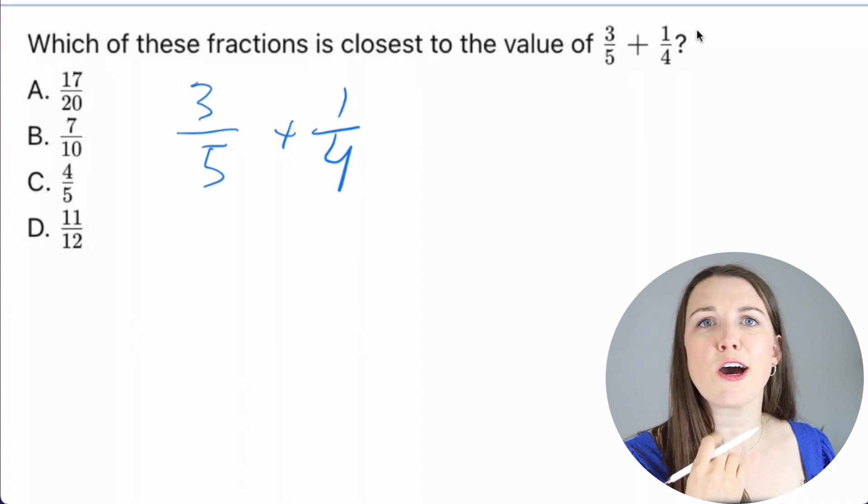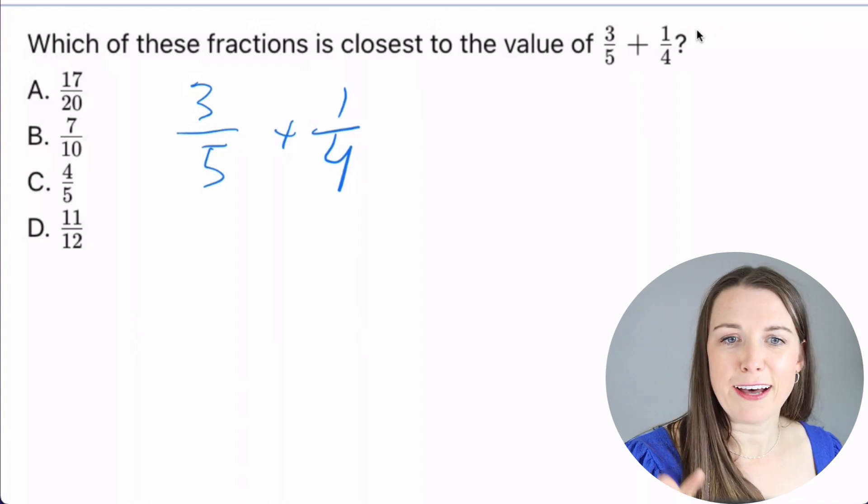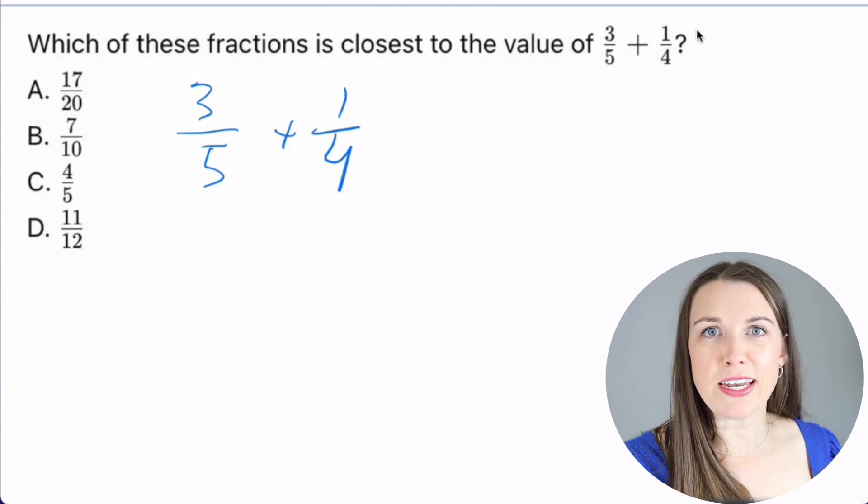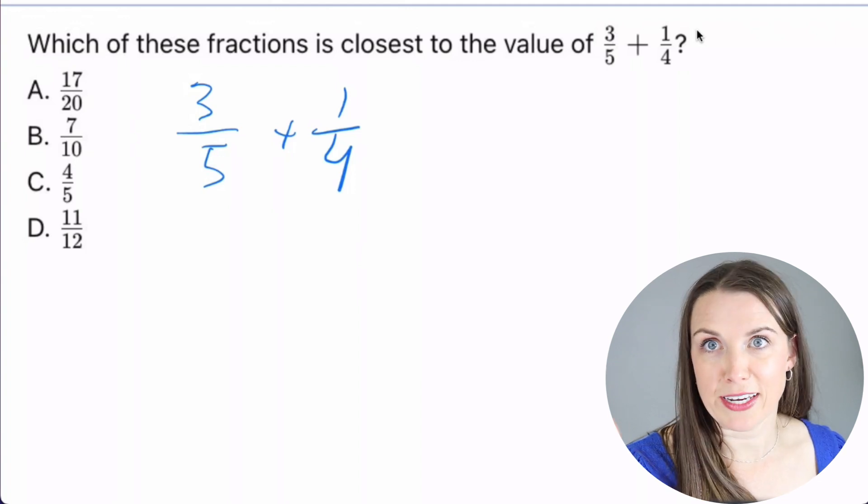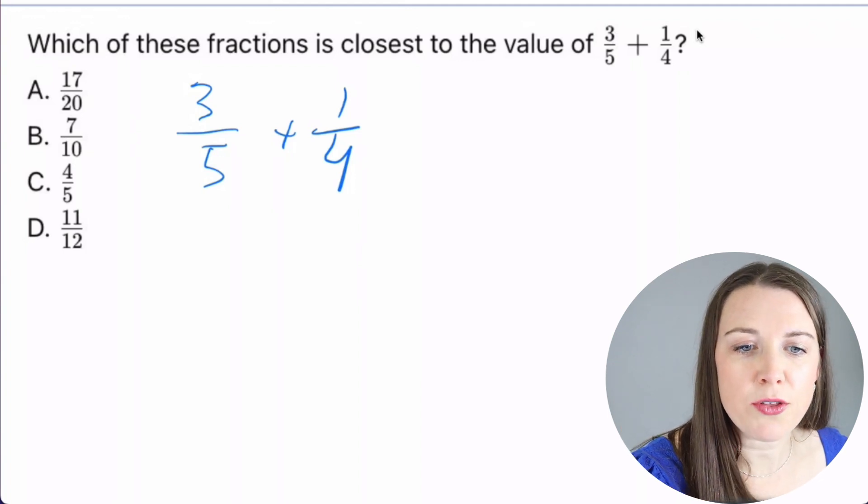And what we need to do is we need to see, hmm, what is the common multiple of 5 and 4? So what number do 5 and 4 both go into? Hmm, 20, right? So they both go into 20. So I'm going to put the 20 on the bottom.